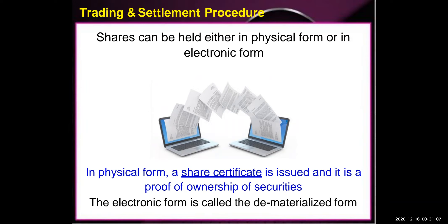In physical form, a share certificate is issued and it is a proof of ownership of securities. Whereas the electronic form is called the dematerialized form.